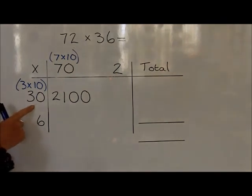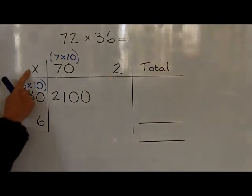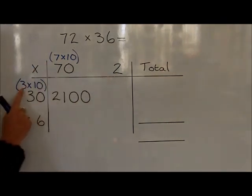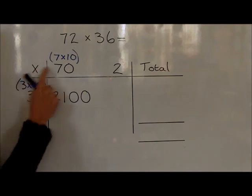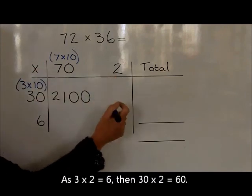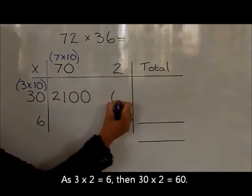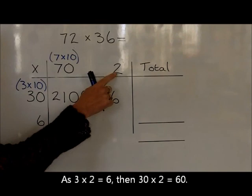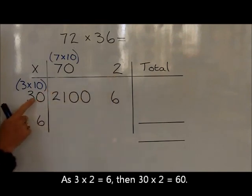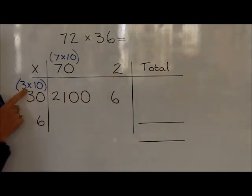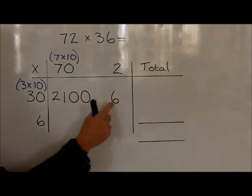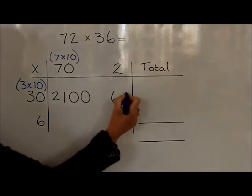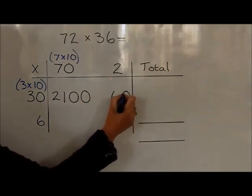We can now work out 30 times 2. We know that 3 times 2 is 6. Therefore, 30 times 2 is ten times bigger than 3 times 2 — 3 becomes 30, so the 6 becomes 60.